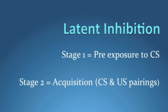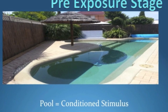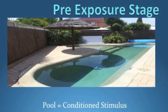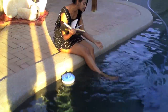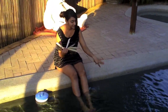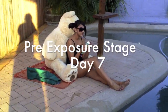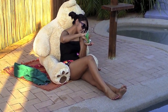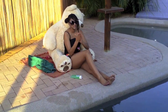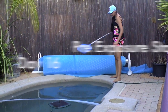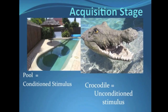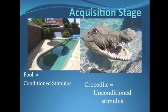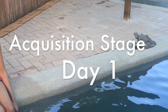For a better understanding, here is the scenario. During the pre-exposure stage of latent inhibition, the pool equals the conditioned stimulus. During the acquisition stage of latent inhibition, the pool continues to be the conditioned stimulus and is paired with a crocodile, which is the unconditioned stimulus.